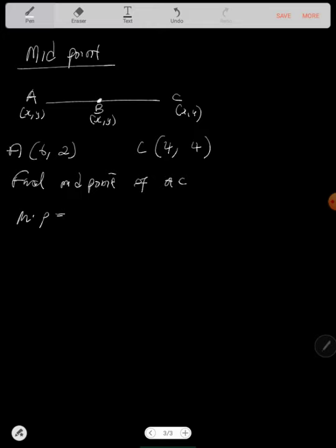Midpoint is equal to X1 plus X2 over 2 comma Y1 plus Y2 over 2. Now, this is your X1, your Y1, your X2, your Y2.